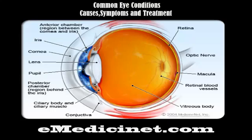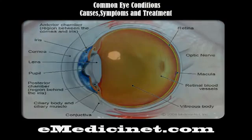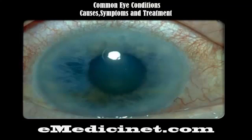Glaucoma — the sneak thief of sight — refers to a group of eye diseases that affect the optic nerve and may cause vision loss. Optic nerve damage in glaucoma is primarily due to elevated intraocular pressure (IOP) within the eye. Glaucoma is classified either as open-angle — the more common, chronic condition which is usually painless — or angle-closure glaucoma, the more unusual type, which often occurs suddenly and is associated with pain and redness of the eye.